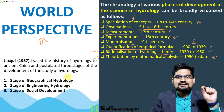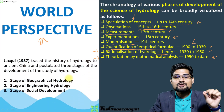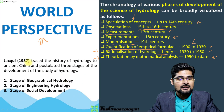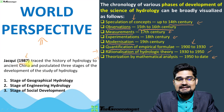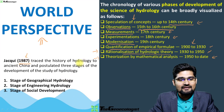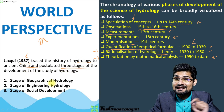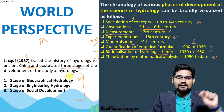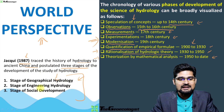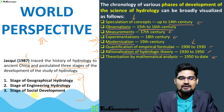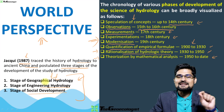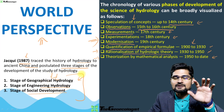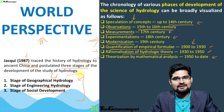There are certain people whose contributions are important. Jackie in 1987 traced the history of hydrology to ancient China and identified three stages of development: geographical hydrology, engineering hydrology, and social development — this is the sequence observed in terms of Chinese development of hydrology.